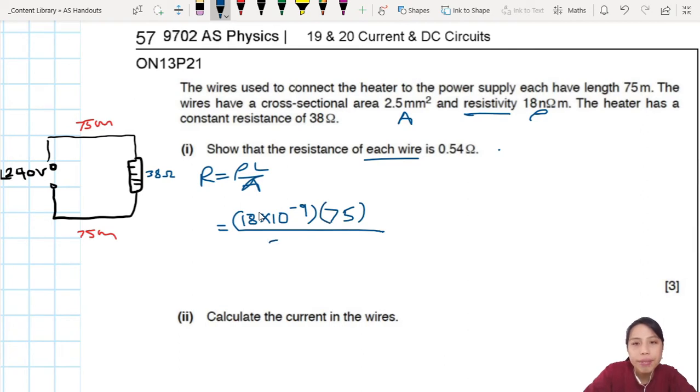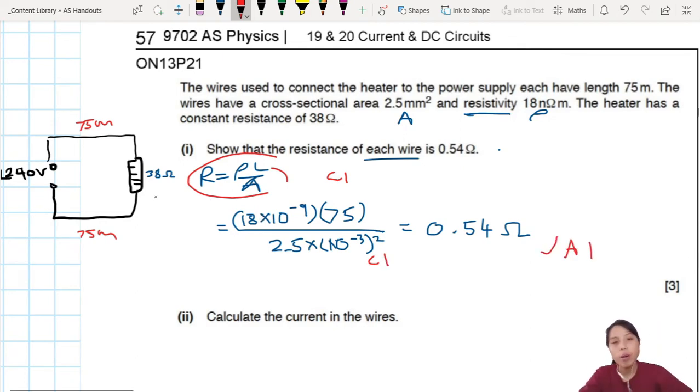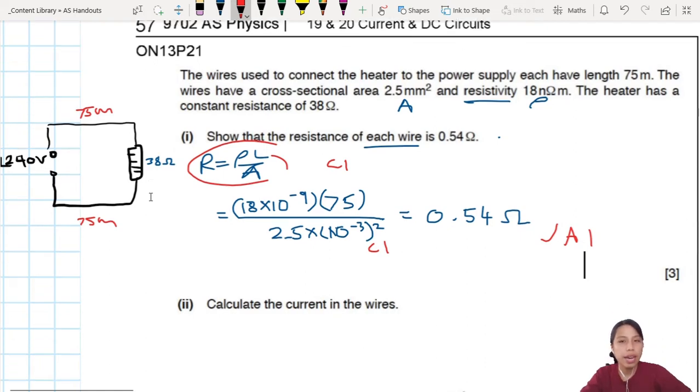Cross-sectional area is 2.5 milli. So must put times 10 to the negative 3. But millimeters square, so must square that also. Okay, calculate that. You should get, if no calculator problem, 0.54 ohm. You're very small. Good. Wire, you don't want a lot of resistance. Three marks for this. First one is from your equation. They see you know how to use this or not. Do you even know the equation? Then they see you plug in values, plug in correct or not. And then lastly, your final answer though, 0.54. Okay, still not too bad. It's more of a direct calculation thing.